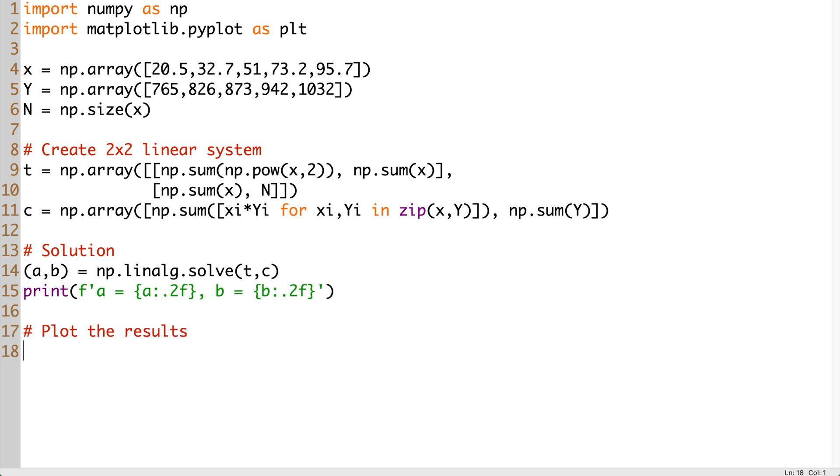The final step is to check the results by plotting the given points and the straight line by using matplotlib tools. To plot the straight line, we define the equation as a lambda function. The plot will contain the points from the experiment as red round dots and the blue straight line.